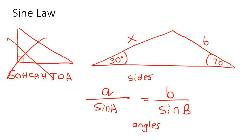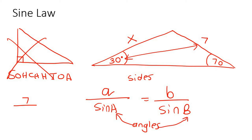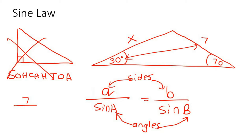You've got to choose opposites. So these two go together because they are the opposites. You could say 7 because that's the side, and then these are the angles, and these are the sides. The A's go together because A goes with A and B goes with B. So you could say 7 over the sin of its angle, which is 30, equals to X over the sin of its angle, which is 70.